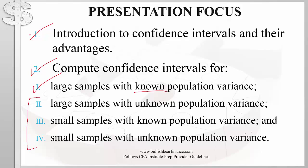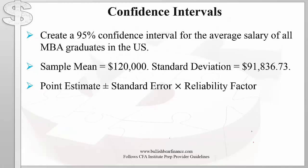We will learn how to compute confidence intervals for large samples with unknown population variance, as well as small samples with known and small samples with unknown population variance. For all of the examples we use in this presentation, we will create a 95% confidence interval for the average salary of all MBA graduates in the United States. We will assume that the sample mean is $120,000 and the standard deviation is $91,836.73, which may represent the population or sample standard deviation depending on the example.